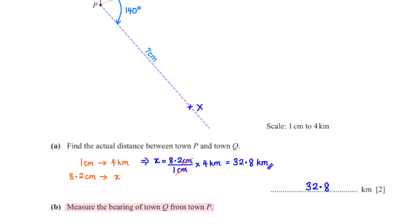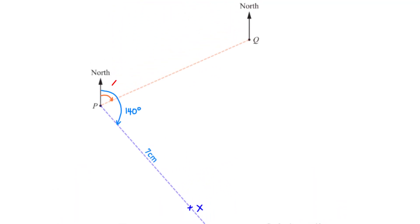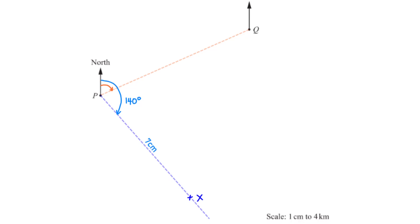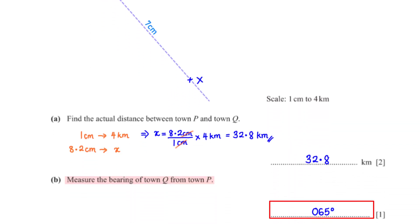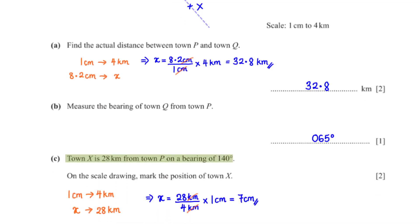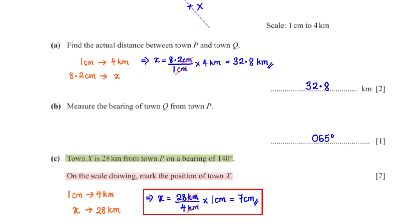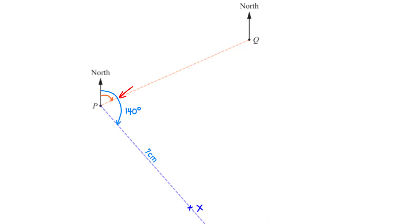Measure the bearing of town Q from town P. Using a protractor, we measure the angle from the north of point P to Q. This gives us 65 degrees. Town X is 28 kilometers from town P on a bearing of 140 degrees. On the scale drawing, mark the position of town X. To get the equivalent of 28 kilometers on the map, we set up the conversion ratio. When we cross-multiply and make x the subject, this equals 7 cm. So on the scale drawing, we first measure and mark an angle of 140 degrees from the north of point P, then pin the position of town X along this bearing such that X is 7 cm from point P.